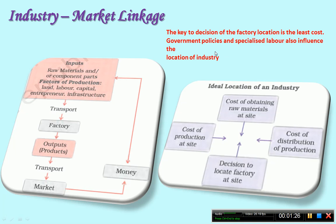In the previous module we discussed how industries are located and how the producer takes decisions while setting up their industries. Here an ideal condition is shown — how the producer takes the decision and what is the main idea in the producer's mind. The key to the decision of factory location is the least cost.